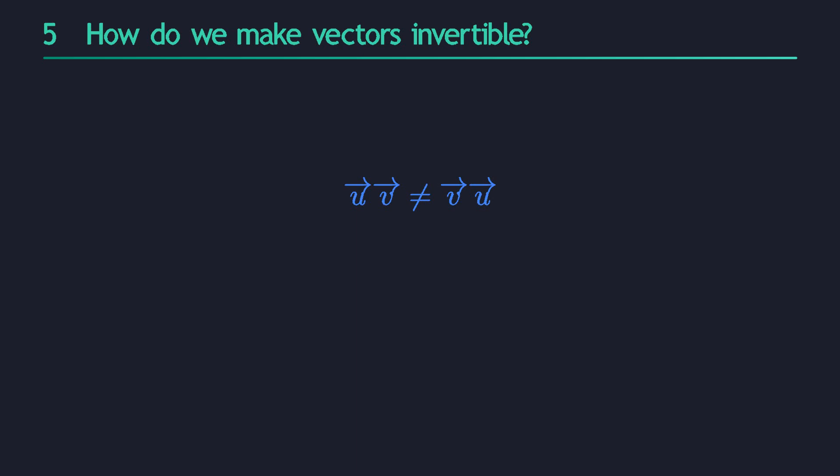That's why in geometric algebra we should avoid writing division using the traditional slash or fraction line. It's better to explicitly multiply with the inverse, so that we can clearly distinguish between multiplying on the left or on the right. Lucky for us, the left and right inverses for vectors are always the same.